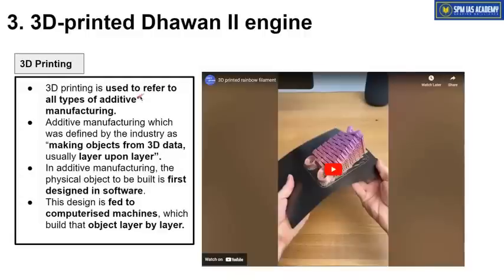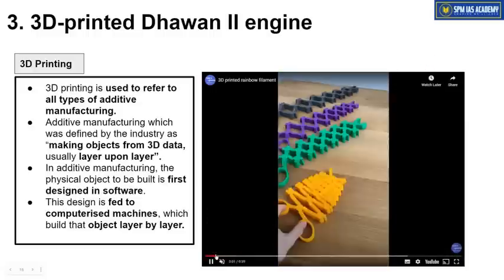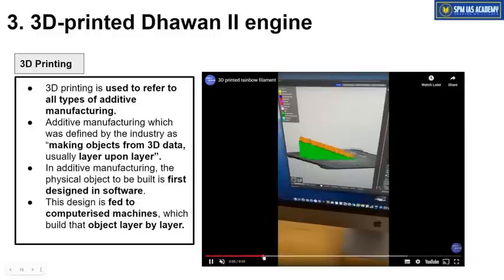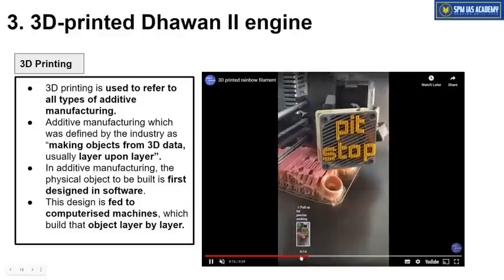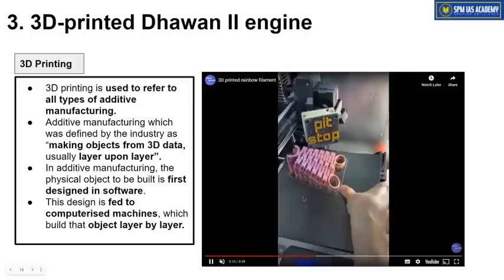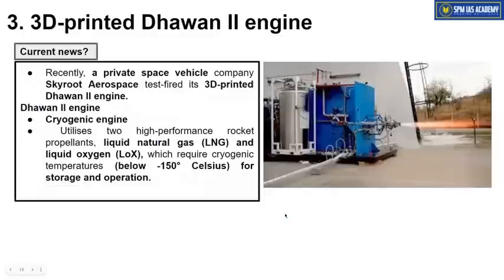3D printing is known as additive manufacturing — manufacturing done layer by layer. First, a Computer-Aided Design (CAD) is created using software, designing whatever object needs to be manufactured. Then, with proper input, the object is manufactured by printing it layer by layer. As you can see in this video, the object is first designed in the computer, and then layer by layer it is printed to create the final product — that is known as 3D printing. Using 3D printing, this space vehicle component has also been constructed.